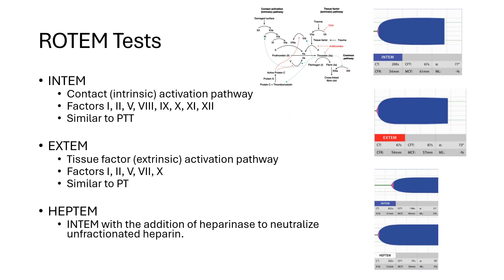ROTEM has several tests to be familiar with. The first test is Intem — this is a contact activation by exposure to phospholipids and ellagic acid. It provides information on coagulation kinetics for factors 1, 2, 5, 8, 9, 10, 11, and 12, similar to PTT.